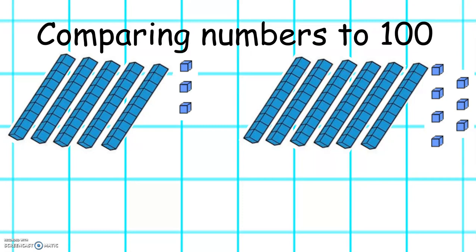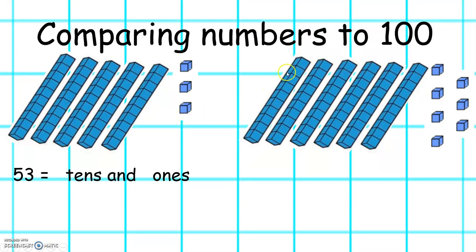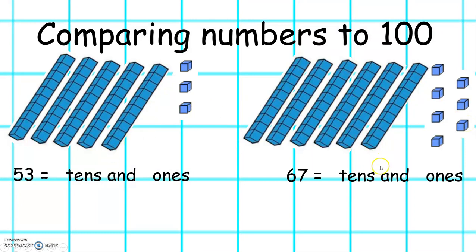This week in maths we will also be comparing numbers to 100. What number is this? 10, 20, 30, 40, 50, 51, 52, 53. And this number: 10, 20, 30, 40, 50, 60, 61, 62, 63, 64, 65, 66, 67. So we have 53 and 67.